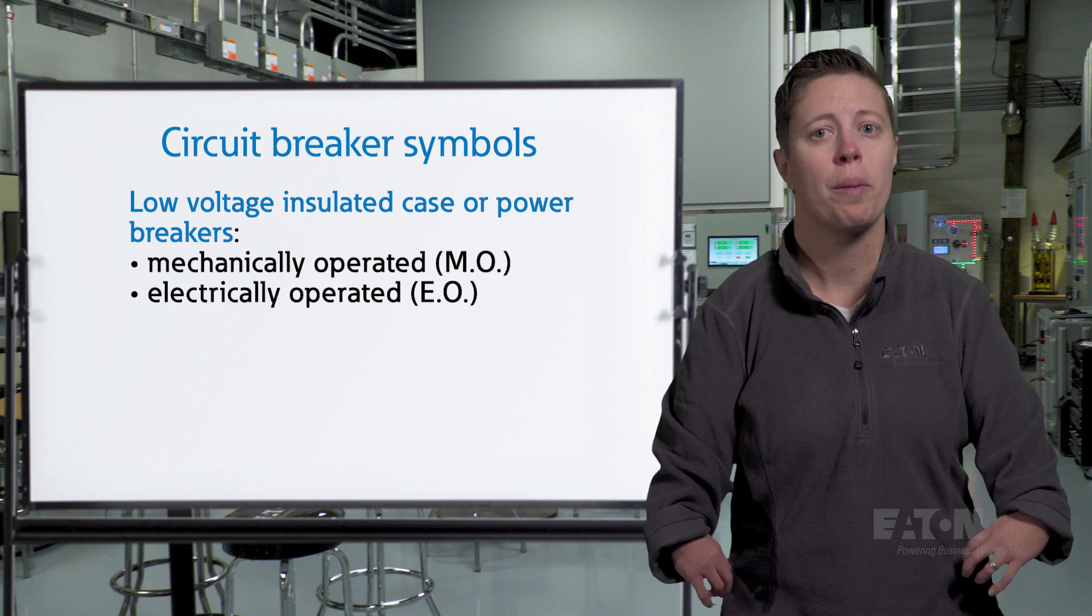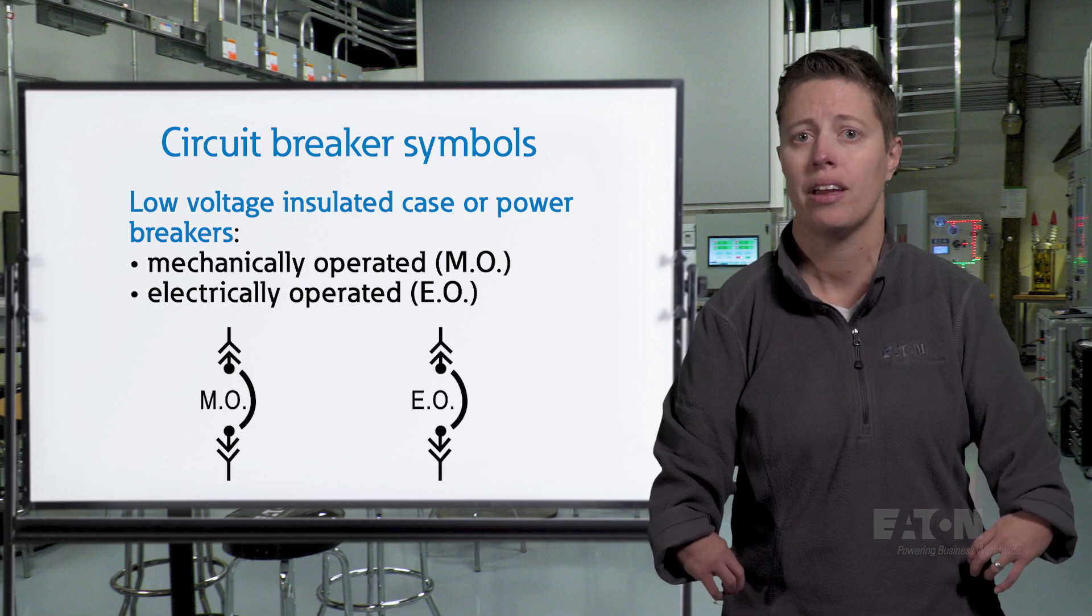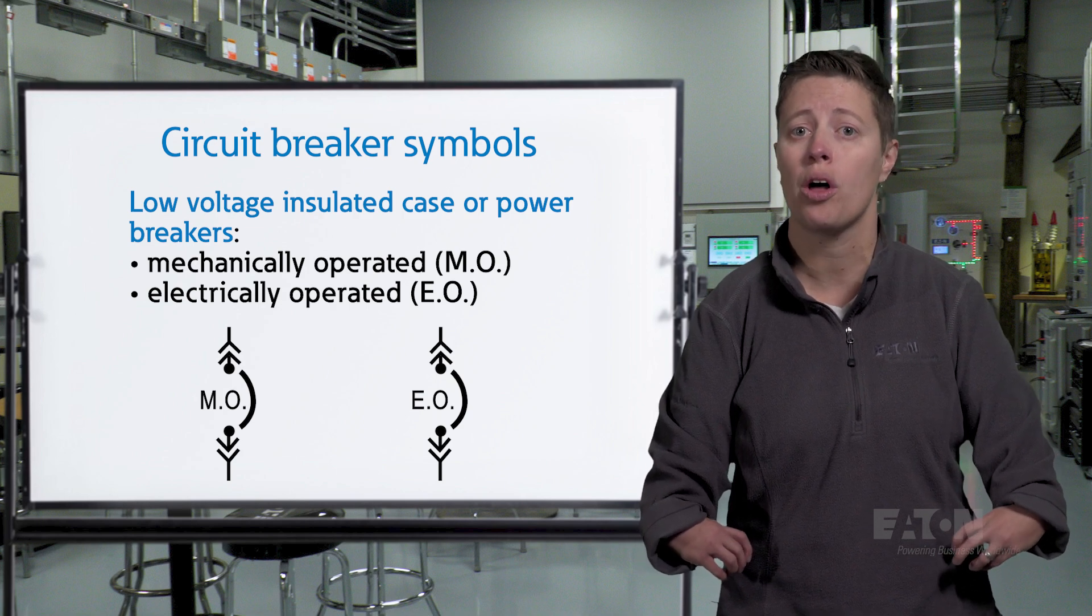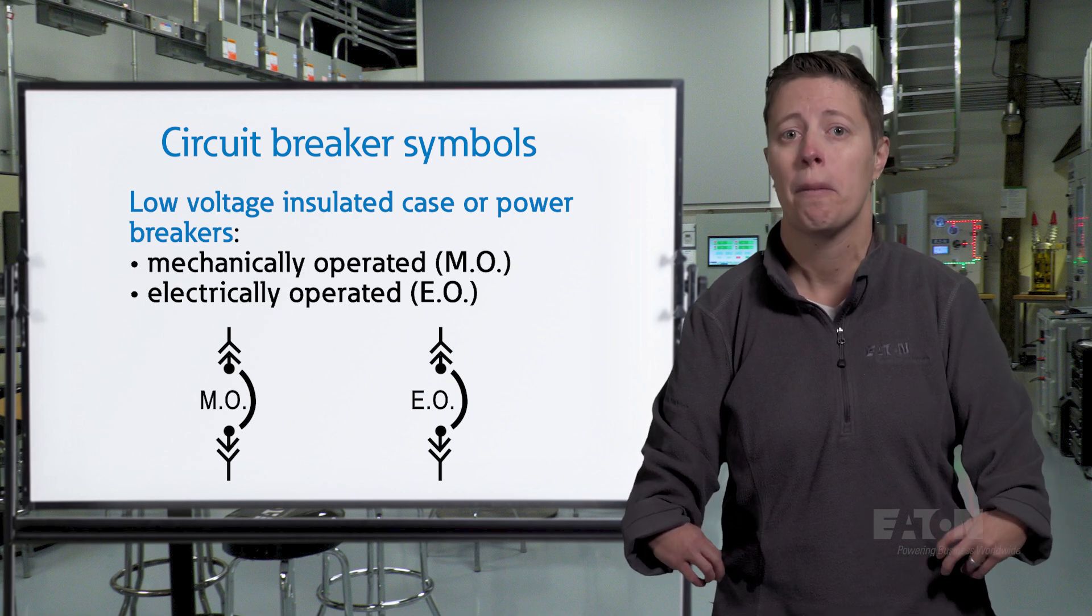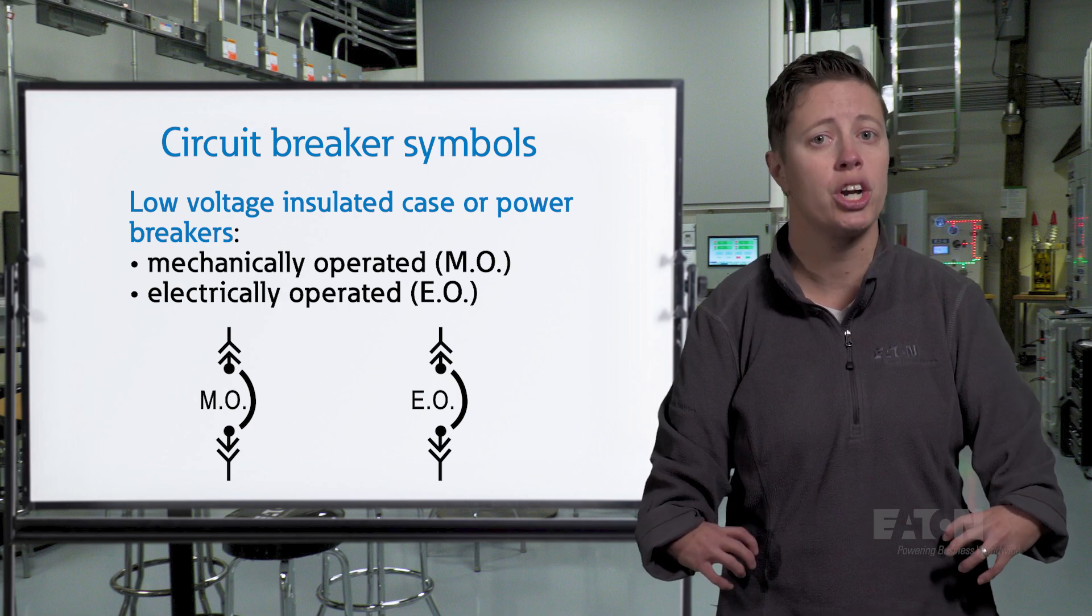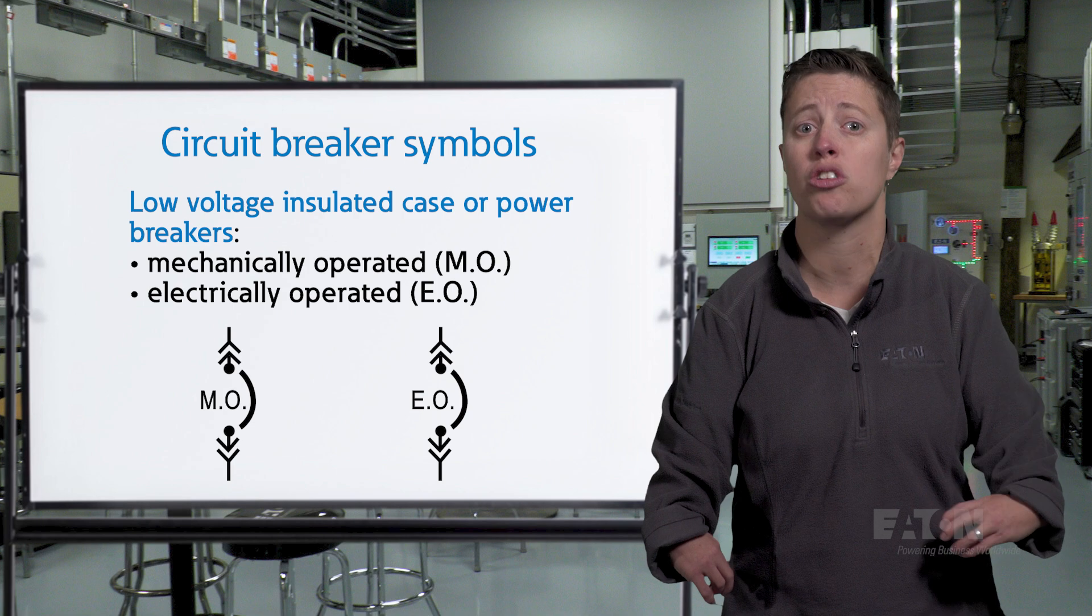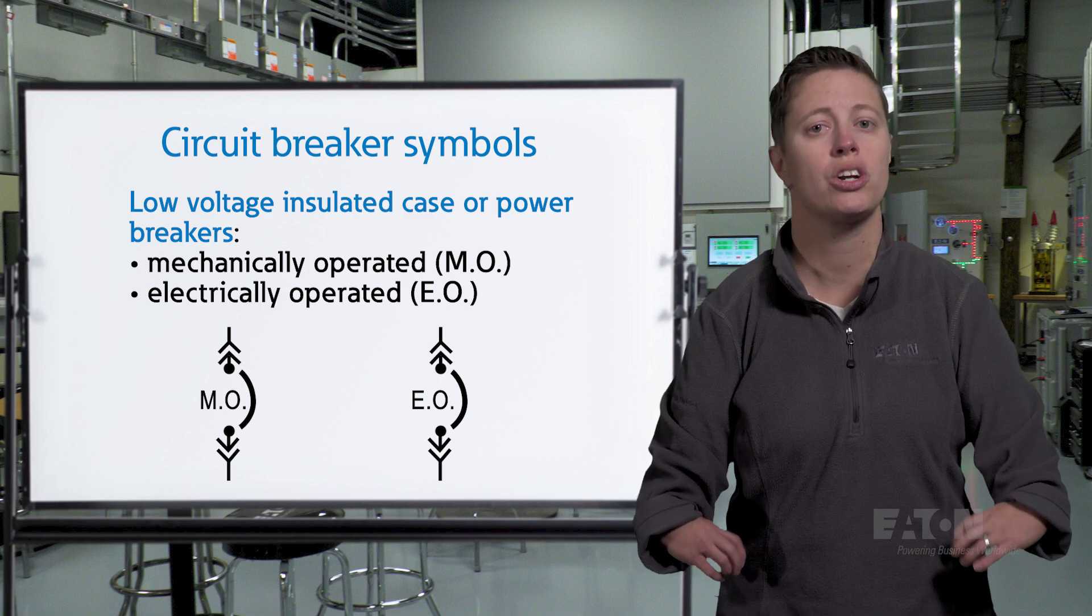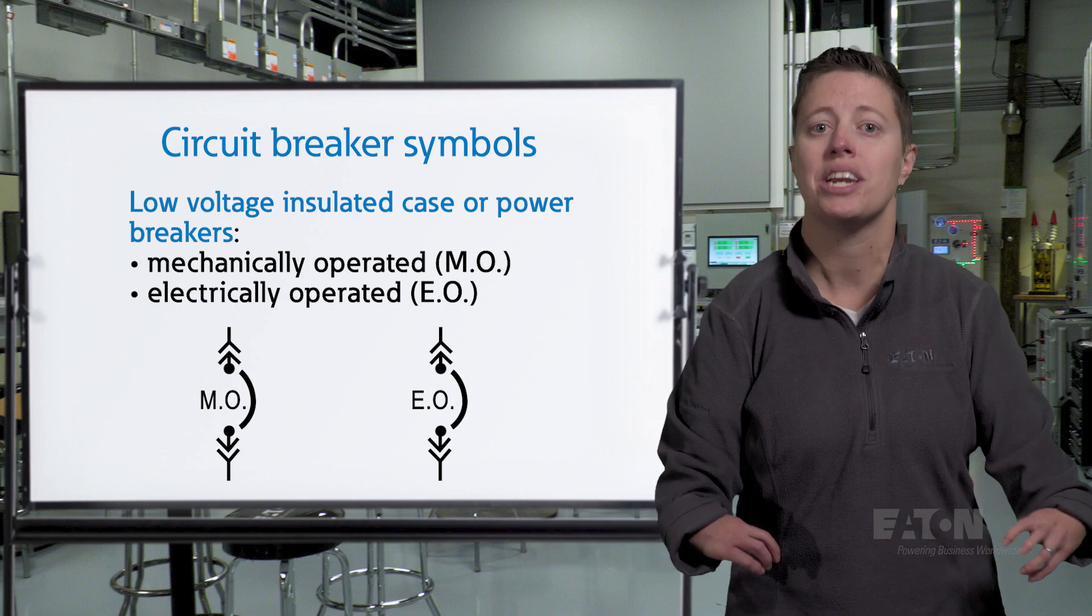Low voltage insulated case or power breakers may be mechanically or electrically operated, and this may be indicated on the drawing. Mechanically operated breakers can only be opened by the integral trip unit or opened or closed by a person interacting with the front of the breaker, and may be indicated by the designation MO for manually operated. Electrically operated breakers include a shunt trip allowing the breaker to be opened from an external signal, and a spring release allowing the breaker to be closed from an external signal. The external signal may come from a push button, control switch, or other protective device. Electrically operated breakers may be indicated by the designation EO.